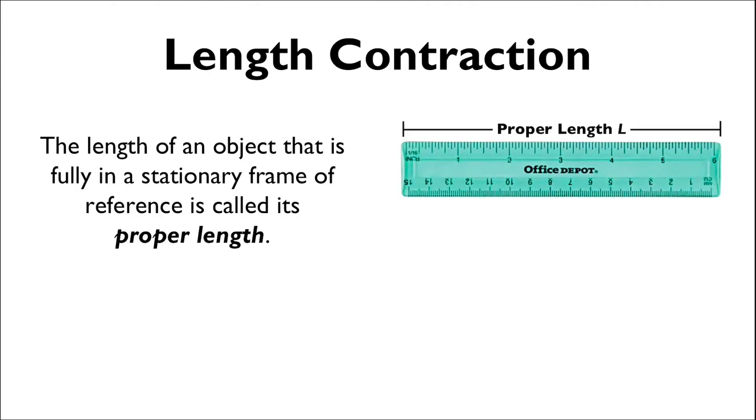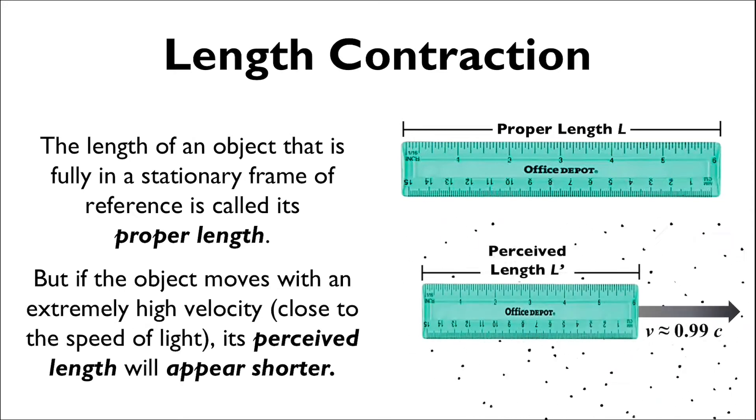This length, measured when the full length of the object is completely in the stationary reference frame, is called the proper length of the object. But if it were moving at an extremely high velocity, say 99% of the speed of light, it would be impossible for both ends of the object to experience the same type of motion.